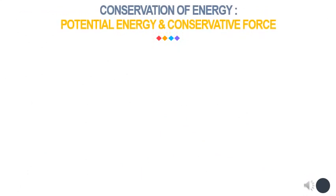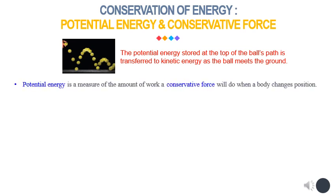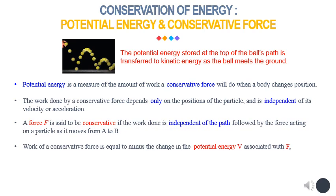The principle of work and energy is useful for solving many engineering problems. However, in many engineering applications, the total mechanical energy remains constant, although it may be transformed from one form into another — this is known as the principle of conservation of energy. To formulate this principle, we must first define potential energy. Potential energy is a measure of the amount of work a conservative force will do when a body changes position. When the work of a force F is independent of the path followed, the force is said to be a conservative force, and its work is equal to minus the change in potential energy V associated with F. The work is negative when the change in potential energy is positive, which is when V2 is greater than V1.